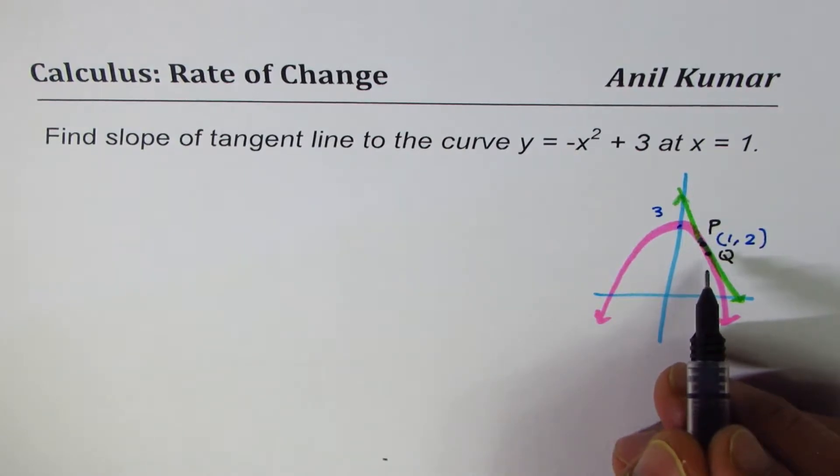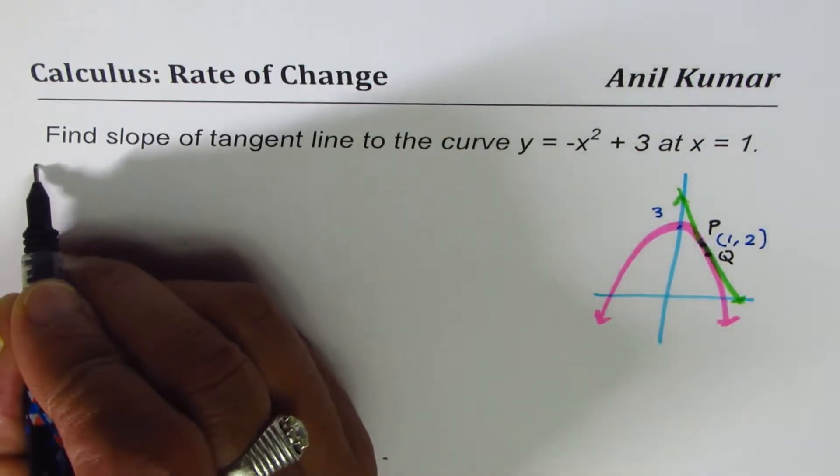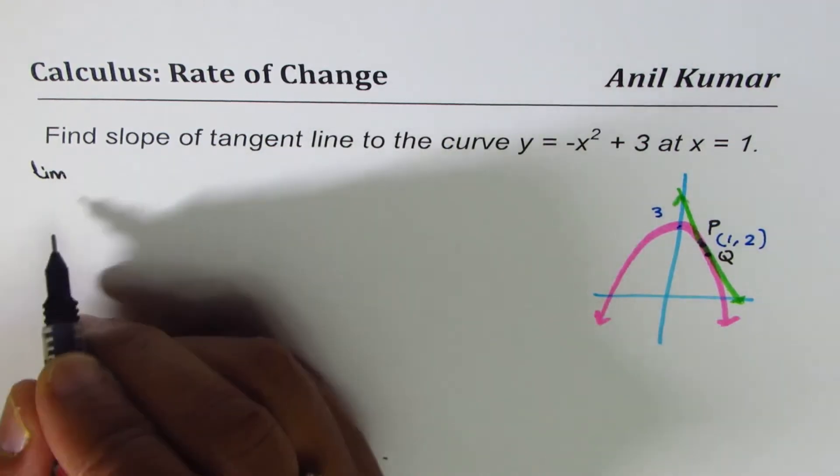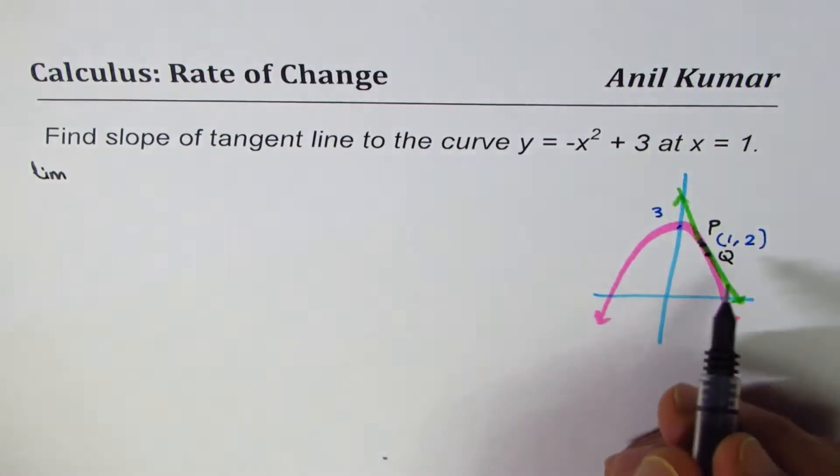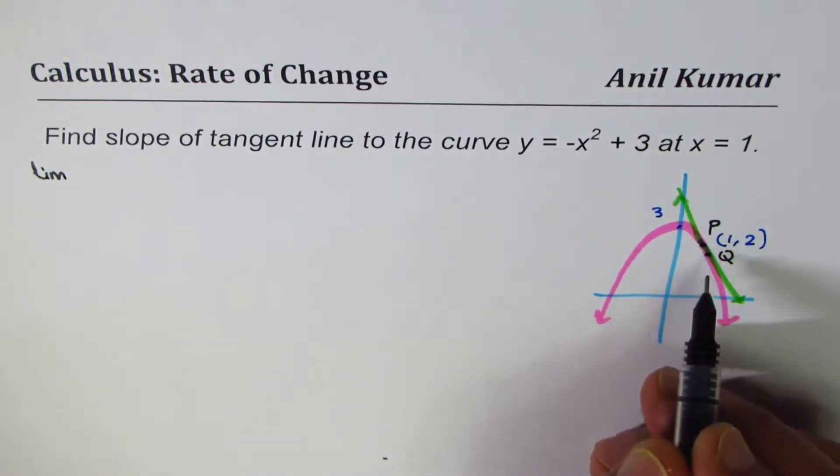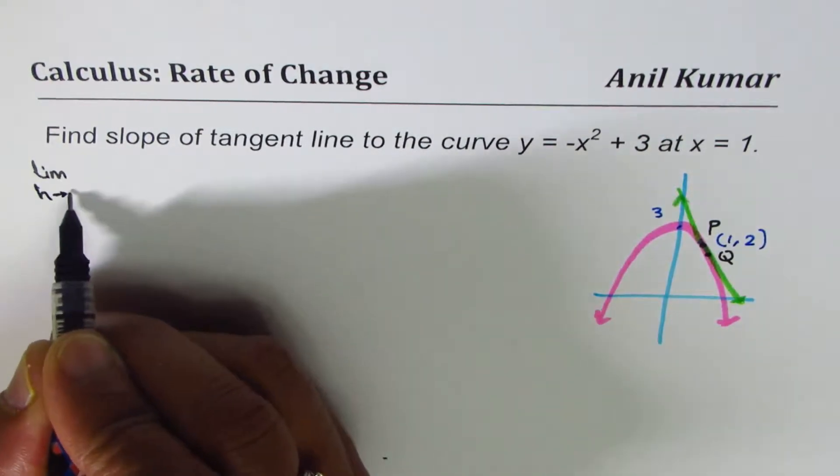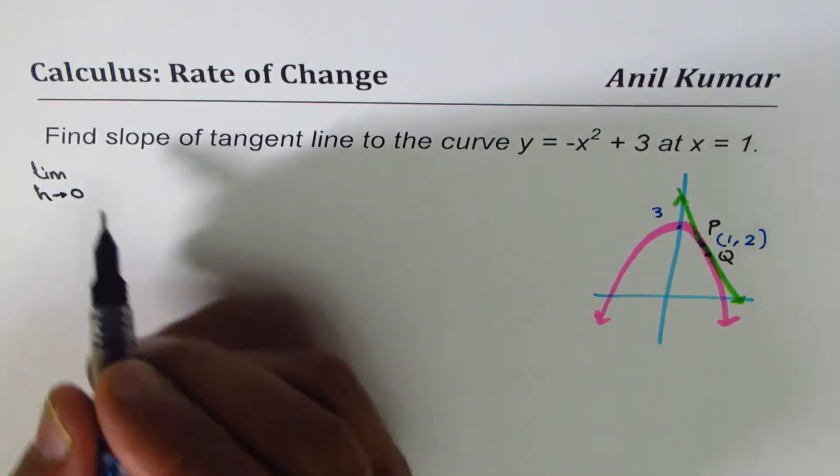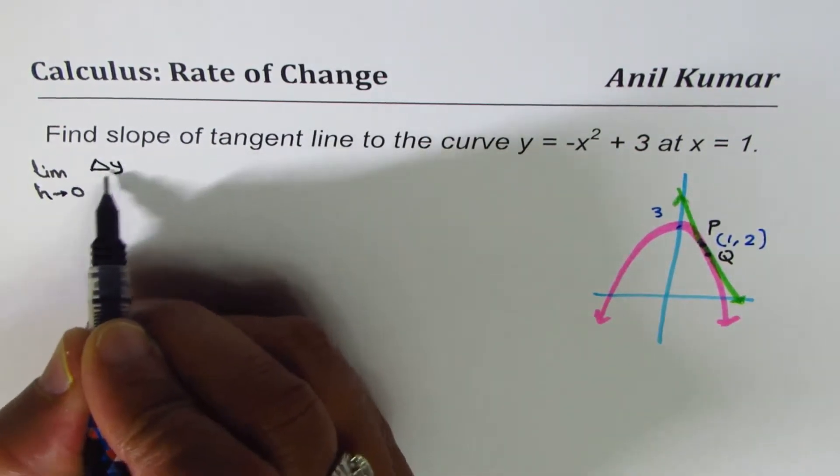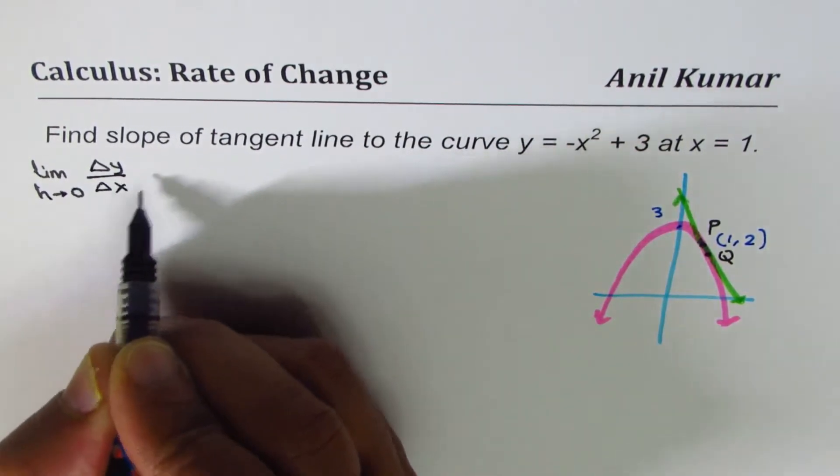So that gives us the idea that slope of the tangent will be limit when the distance between the two. So we normally represent this by letter h approaches 0 for change of y value over change of x value.